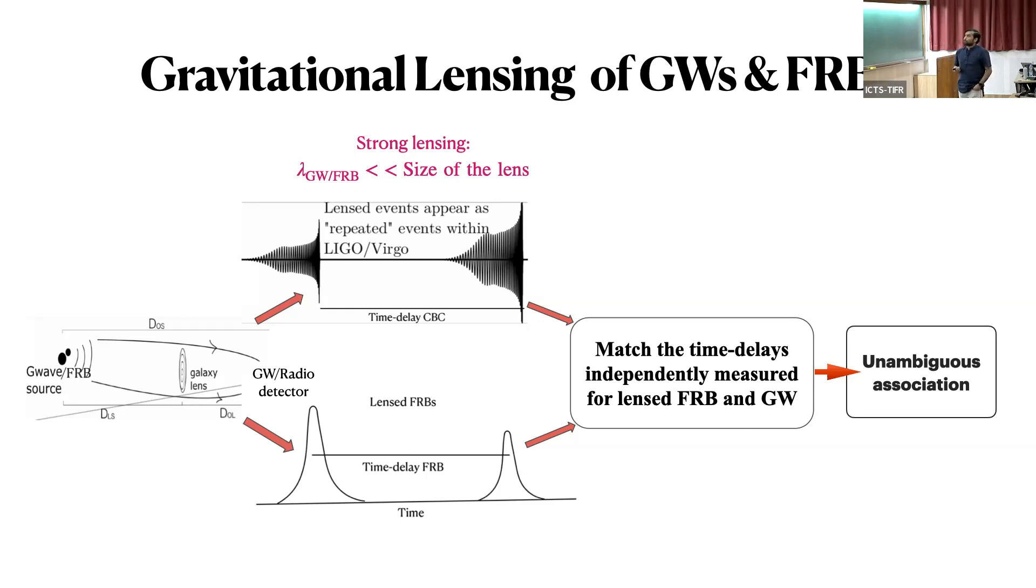We consider an astrophysical scenario where there is a compact binary source emitting, we assume it is emitting both gravitational signals as well as FRBs. If it is lensed by a galaxy, then it will have multiple images for both the sources. For gravitational waves, it will be repeated signals with amplitudes rescaled, but they will have some time delay. Similarly, you will have four FRBs as well. The interesting thing is that the time delays for both of these messengers should be same because the lens is same. So instead of looking for the arrival times of these different signals or the sky localization, you just look for the time delays. If these time delays are same, you can claim an unambiguous association.